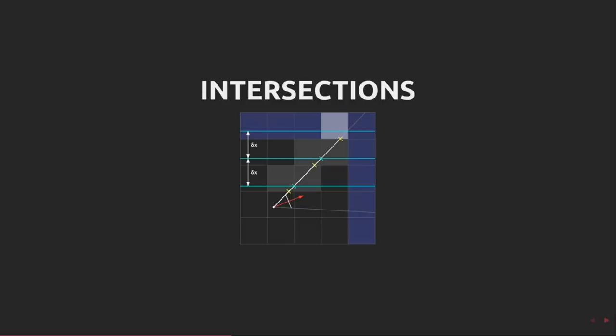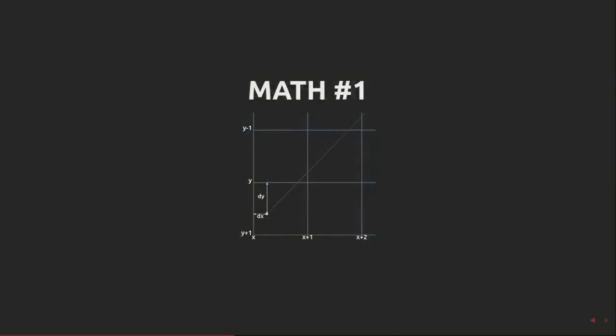Similarly, the vertical grid line intersections are spaced one unit in x and delta x units in y. How do we find these values? The first intersection point and the delta to each subsequent point.